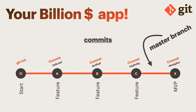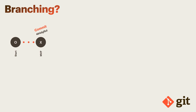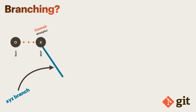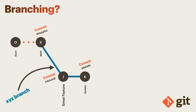Now suppose we have a minimum viable product and our app is doing well on the Play Store, App Store, or the web. We want to add a great new feature — feature J. Should we do it on the master branch? No. Instead, we create a new branch from the master branch — here I've called it branch XYZ. We start preparing feature J on this branch so the master branch is not affected, and we make commits as we progress.